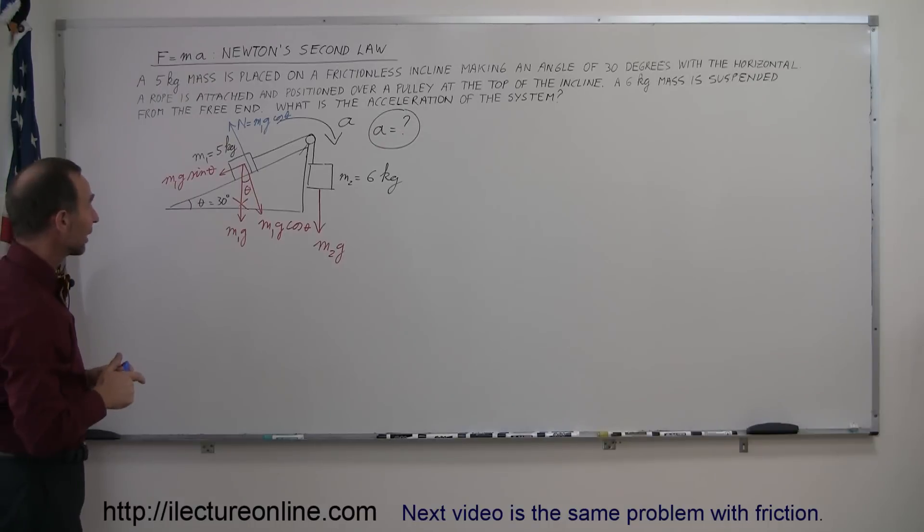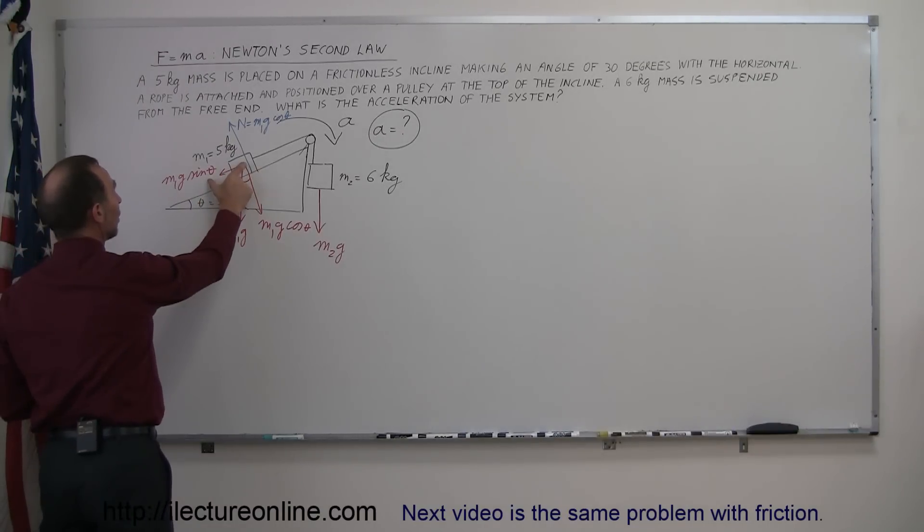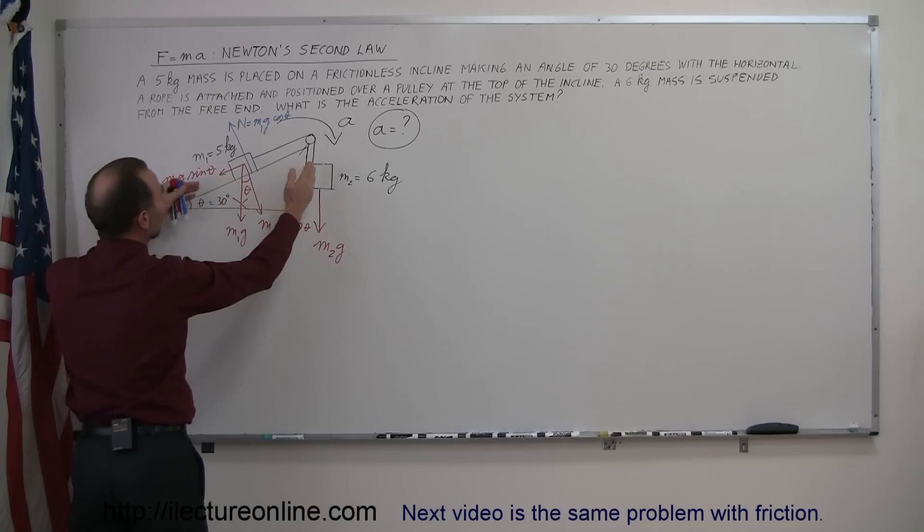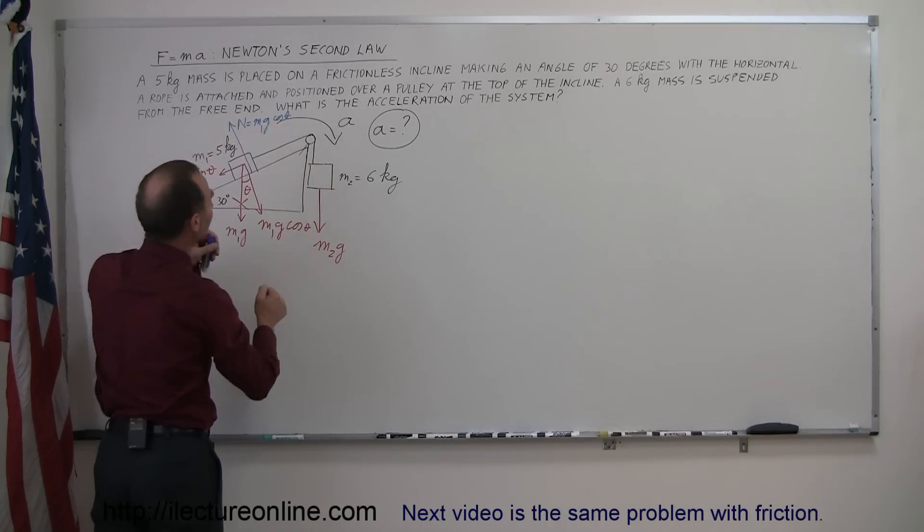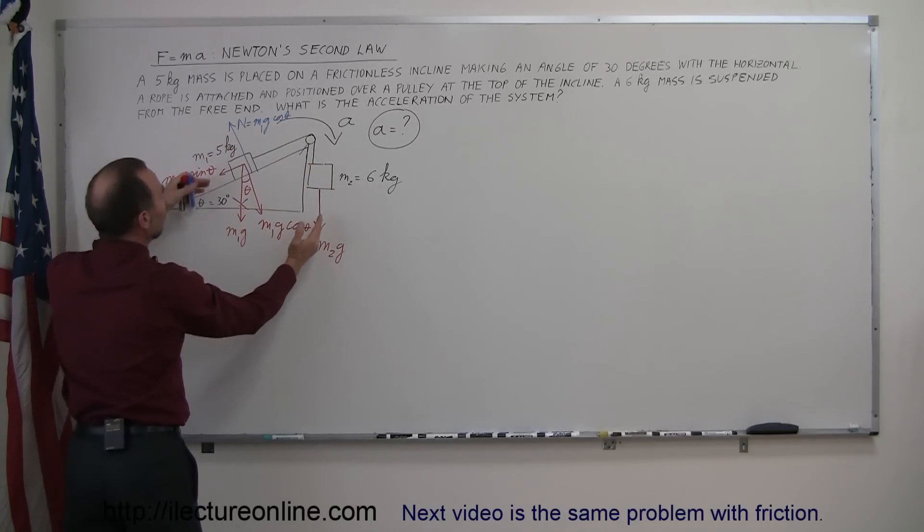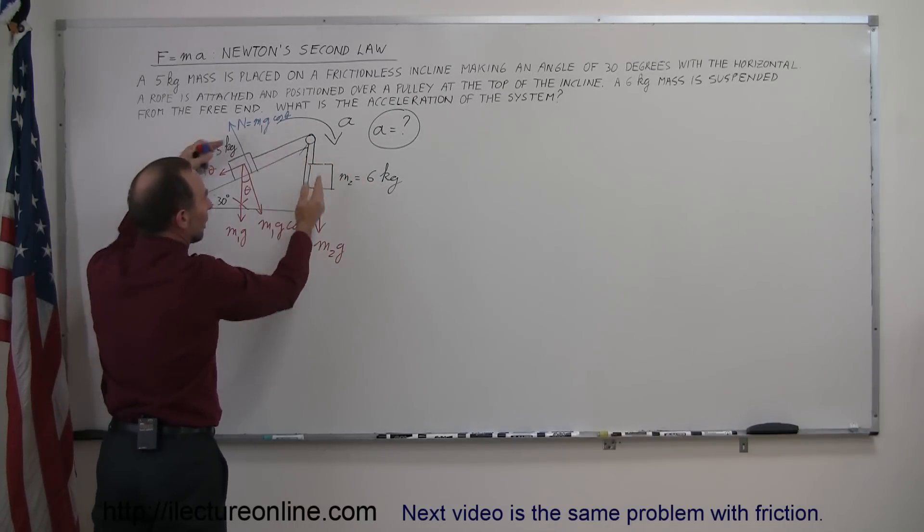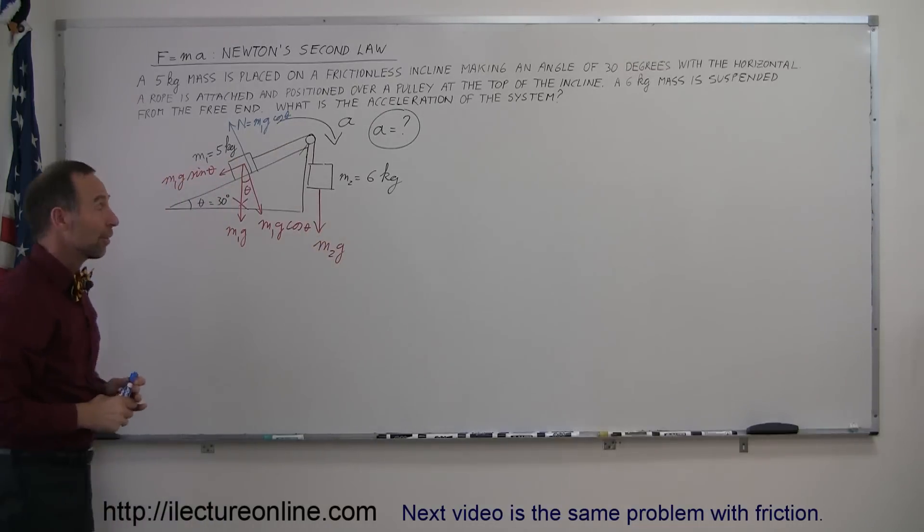And then the only forces left that act on this whole system is this force, m1g sine theta, pulling this down, and m2g pulling this down. Now if this force is bigger than this, the whole system will accelerate this way. If this force is bigger than this, then the whole system will accelerate this way. The fact that this is a bigger mass, I would assume that it's going to accelerate in that direction.